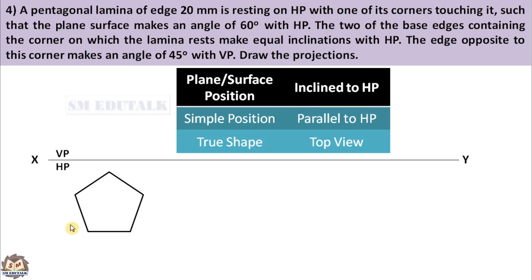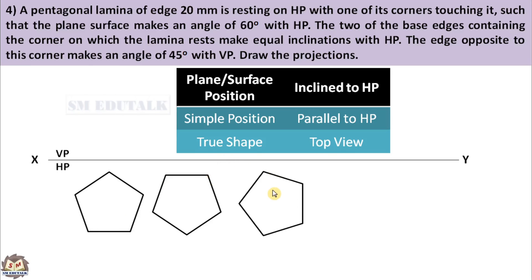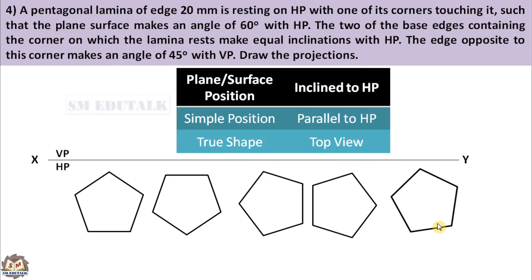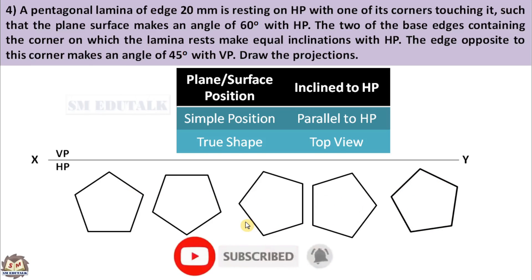The top view is a pentagon, but in what orientation should it be drawn? There are many orientations. This pentagon is drawn by keeping its bottom edge parallel to the XY line. This pentagon is drawn by keeping its top edge parallel to the XY line. This pentagon has its right edge perpendicular to the XY line. This pentagon has its left edge perpendicular to the XY line. And in another orientation, no edge is parallel or perpendicular to the XY line — all edges are inclined. You have to choose one orientation among these five.